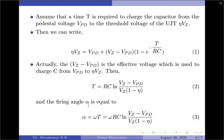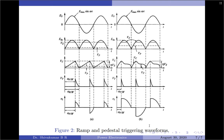Finally, the firing angle α is equal to ω·T. By substituting the value of T from the equation, you can compute the value of α given the values of R, C, zener voltage Vz, pedestal voltage Vpd, and η. With that, we can move on to the waveforms of the ramp and pedestal triggering circuit.